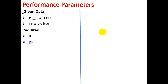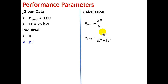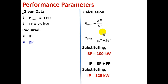How to find IP and BP: eta mechanical equals BP divided by IP — both are unknown. What we can do is replace IP with BP plus FP in the formula, then the only unknown is BP and we can find it. Once BP is known, using IP equals BP plus FP, we find IP. Substituting all values gives BP equal to 100 kilowatt, and IP equal to 125 kilowatt.